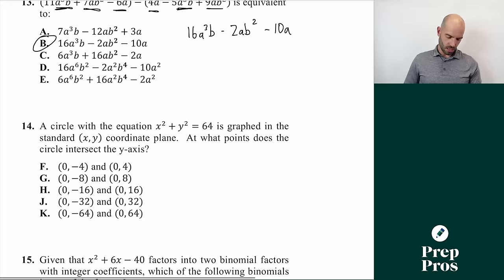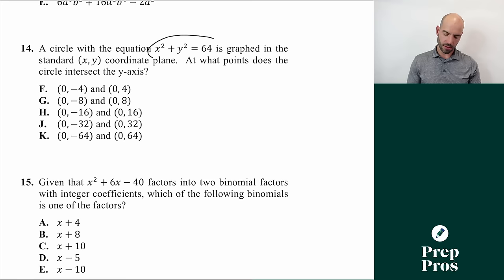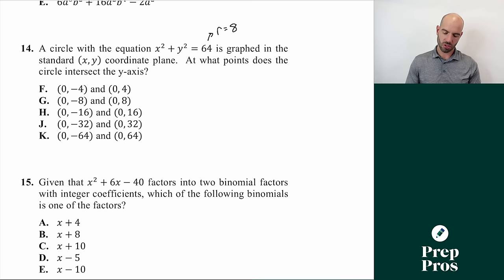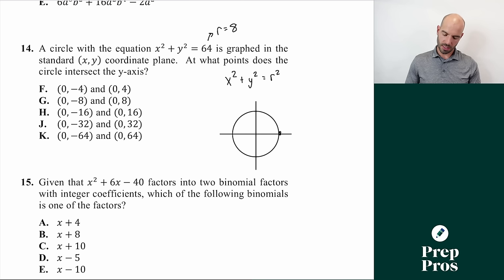Number fourteen is a circle equation. For x² plus y² equals 64, this is a circle centered at the origin with radius 8, since x² plus y² equals r² when centered at the origin. The circle passes through (8, 0), (0, 8), (-8, 0), and (0, -8). We pick the answer that has two points from that list — those are the y-intercepts.